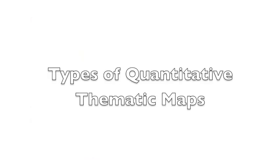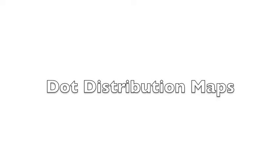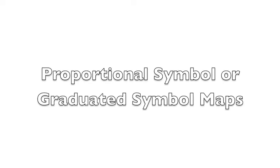Next we're going to look at four types of quantitative maps: choropleth maps, dot distribution maps, isoline maps, and proportional symbol or graduated symbol maps. We'll also look at a fifth type of thematic map called a cartogram, but we're going to see that it's technically not a map. For each type of quantitative thematic map, we're going to describe them and then talk about their strengths and weaknesses.